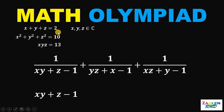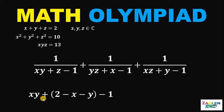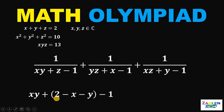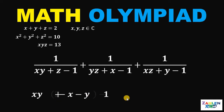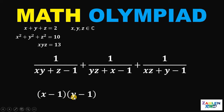Notice that from the first equation, x plus y plus z equals 2. Let's solve for z: z equals 2 minus x minus y. Substituting into the expression, we get xy plus (2 minus x minus y) minus 1. Combining similar terms: 2 minus 1 is 1, so we have xy minus x minus y plus 1. This expression can be factored as (x minus 1)(y minus 1). Therefore, we can replace xy plus z minus 1 with (x minus 1)(y minus 1).